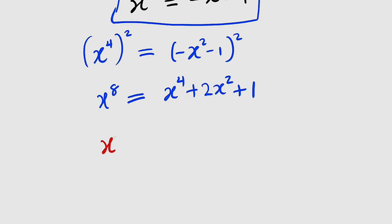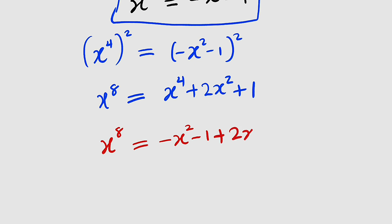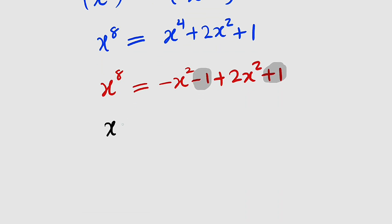Therefore, x to the power of 8 equals negative x squared minus 1, plus 2x squared, plus 1. The negative 1 and positive 1 cancel. All we have is negative x squared plus 2x squared, which is just x squared. Therefore, x to the power of 8 is equal to x squared.